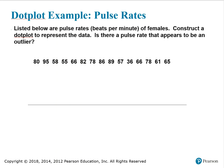Looking at the data set, we notice that 36 is the smallest data value and 95 is the largest data value. When we draw our horizontal scale, we need to make sure we can capture all the data values. So if we start at 35 and count by 5's, we'll need to make sure we get up to 95 to include the largest data value.